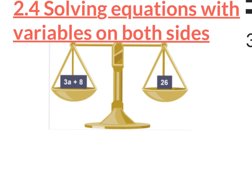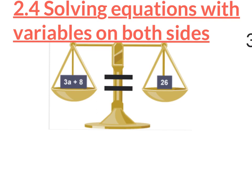Remember, an equation is kind of like a balanced scale — it's perfectly balanced. Here's a visual where you can see that the left side, 3A plus 8, is the same weight as the number 26. Are there variables on both sides? The variable is just on the left side, not on the right. So this is not an example of an equation with variables on both sides. This is just a review so we can practice a little.